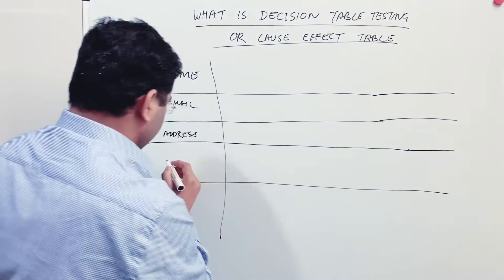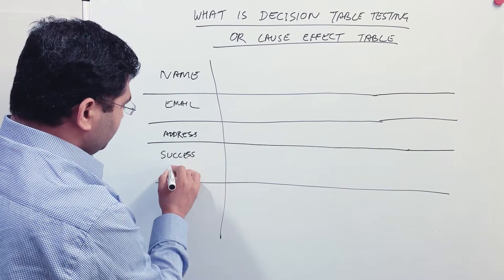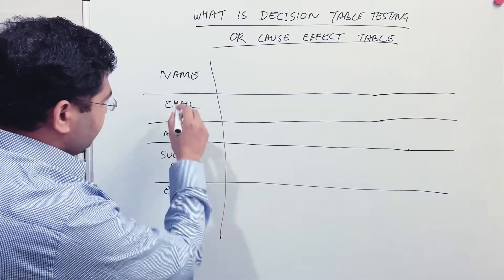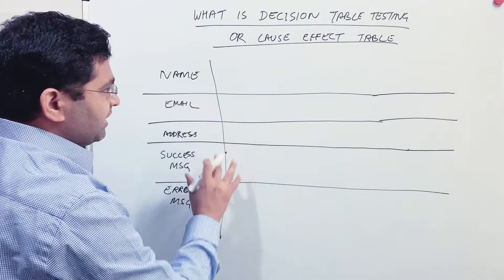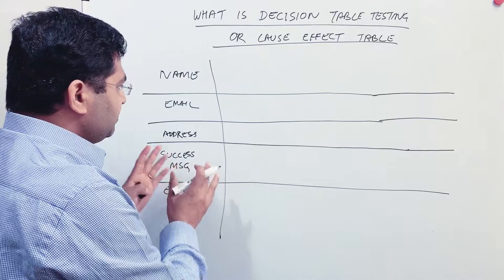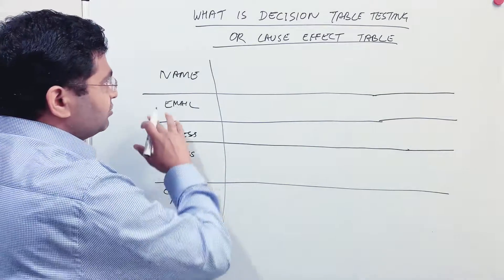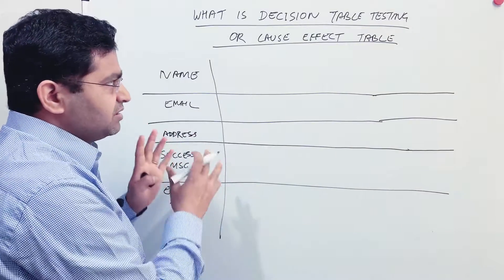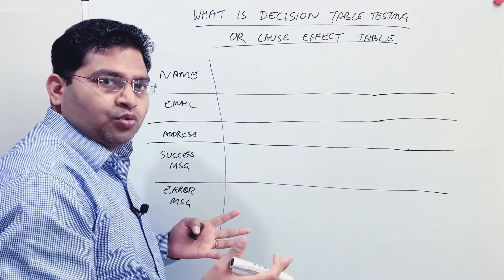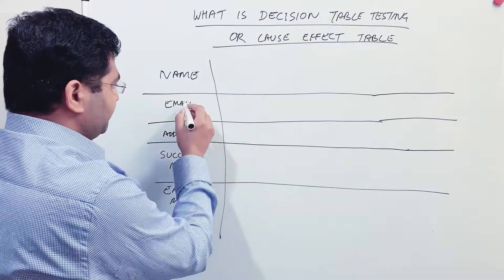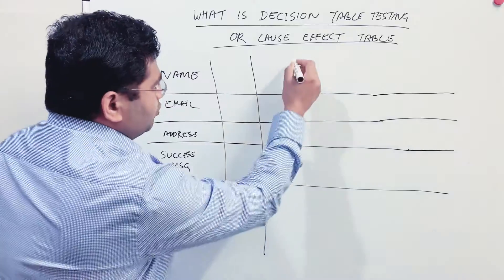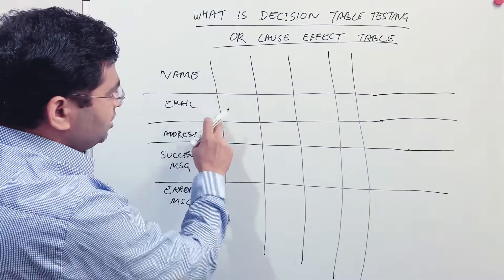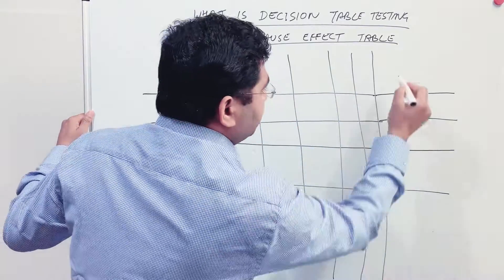At the bottom I'll write success message and error message — these are what need to appear in case of registration failure or success. To get complete coverage and make sure you have tested all the error messages, that's where the decision table or cause-effect table comes in. You'll typically use Excel or a tool like Confluence to create this table. Since we have three inputs, we'll have eight combinations, so we'll have eight columns.